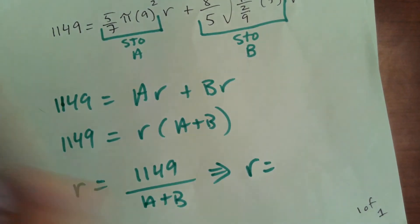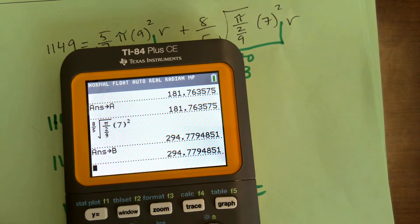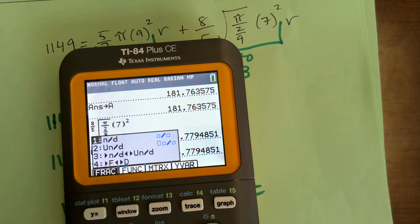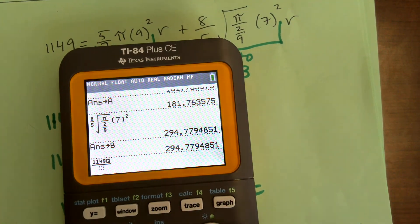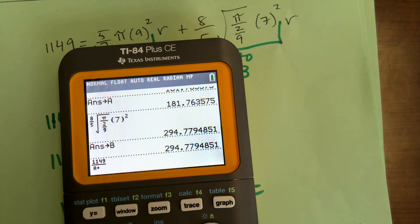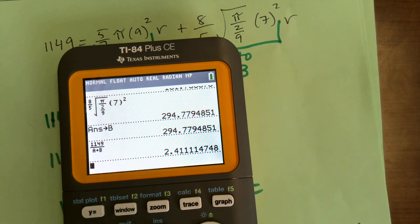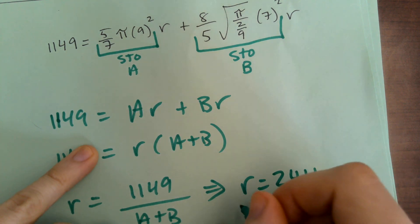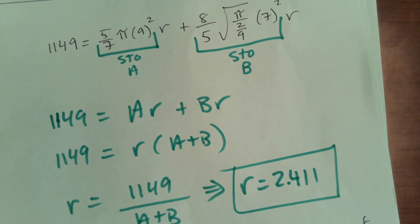Okay, and so I get 1149. And you could skip some steps, guys. Plus B, R. You could factor the R out. Okay, so R is equal to 1149 over A plus B. So now I go 1149. Wait, I'll use this. 1149 over A plus B. Yep, 2.411. Okay.